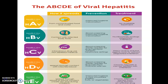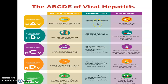Now here is a summary table of all the types discussed. The columns are: virus, mode of transmission, prevention, and treatment. For Hepatitis A: transmitted through contaminated food and water; prevented by improved hygiene practices and vaccination; there is no specific available treatment.